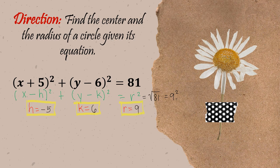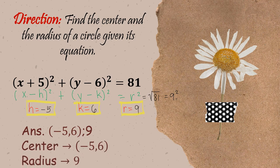We need to write it properly since we are asked about the center and the length of the radius. For our center, we have negative 5 and 6 — put together h and k as an ordered pair: (negative 5, 6). And 9 refers to the length of the radius. So center is (negative 5, 6) and radius is 9. Sometimes you need to include the unit of measurement, but here no unit was mentioned so it's okay.